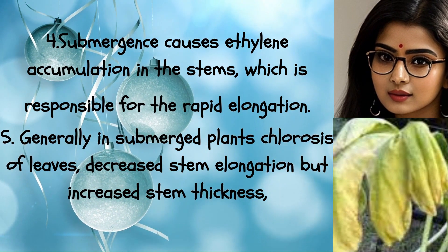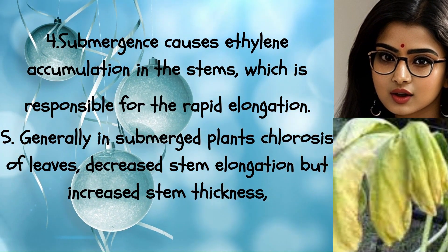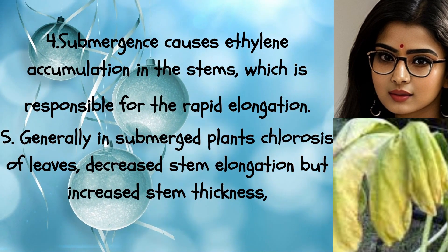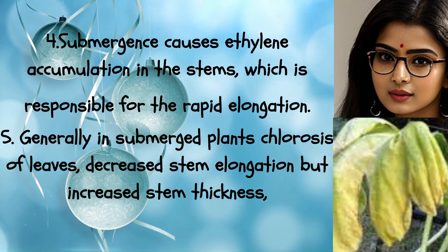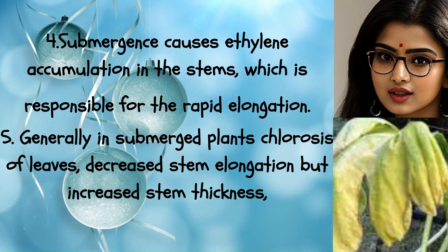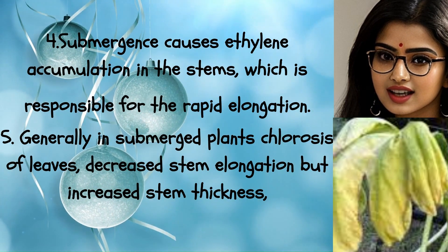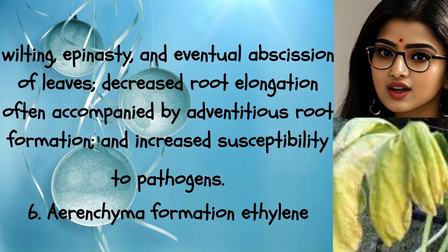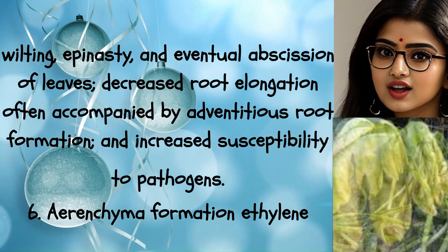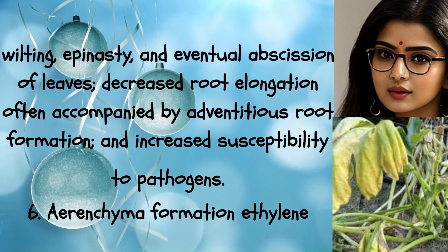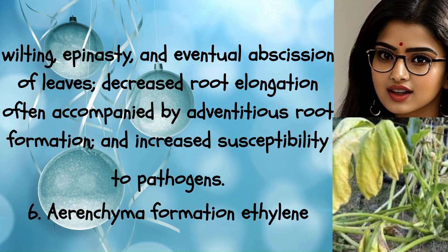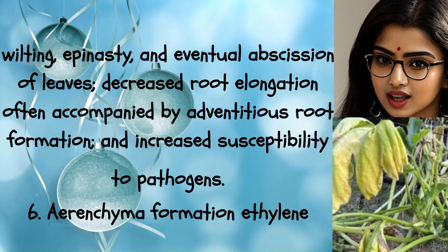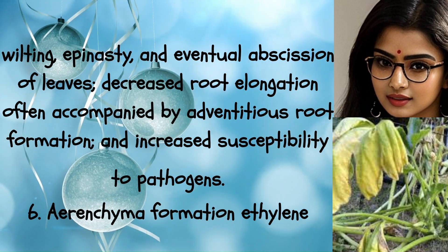General effects of ethylene in submerged plants include chlorosis of leaves, decreased stem elongation but increased stem thickness, wilting epinasty, and eventual abscission of leaves. Additionally, there is decreased root elongation often accompanied by adventitious root formation, and increased susceptibility to pathogens.